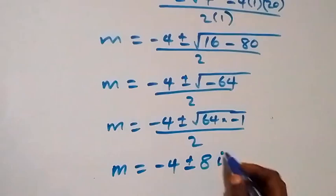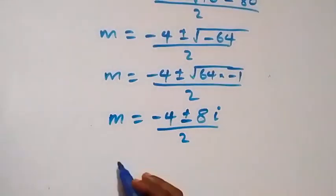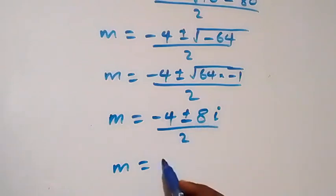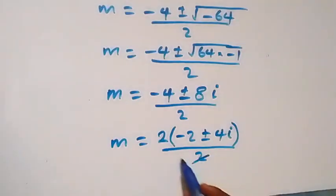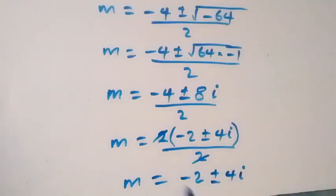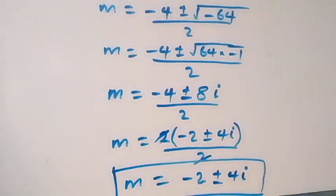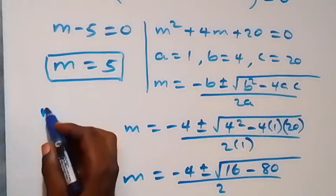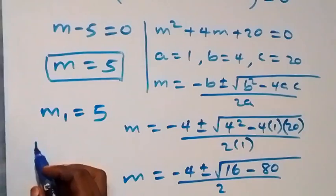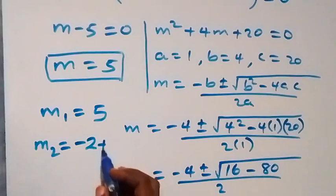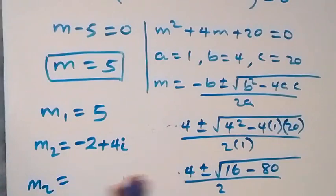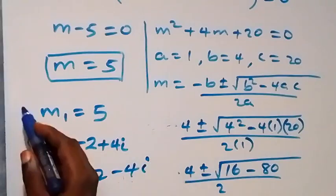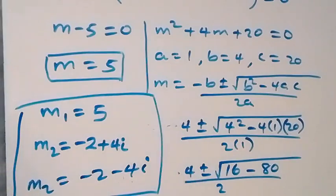This becomes m equals negative 4 plus or minus 8i, over 2. Factoring 2 out gives negative 2 plus or minus 4i, over 2, and the 2's cancel, leaving m equals negative 2 plus or minus 4i. So we have three solutions: m₁ equals 5 (the real solution), m₂ equals negative 2 plus 4i, and m₃ equals negative 2 minus 4i.